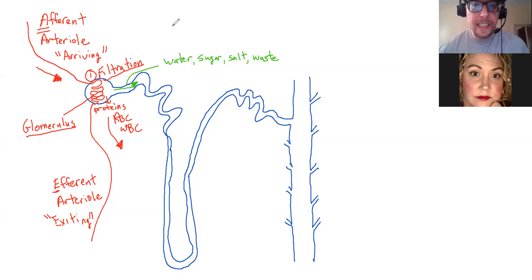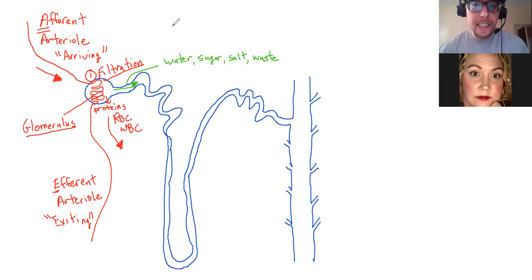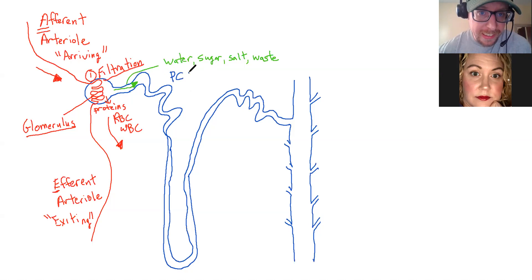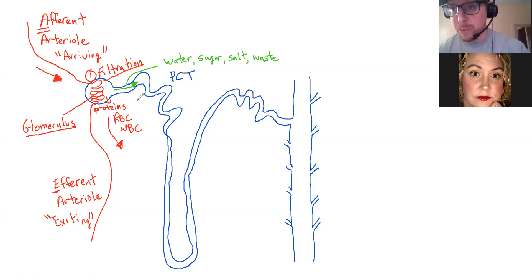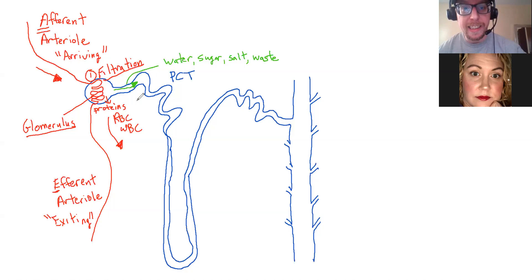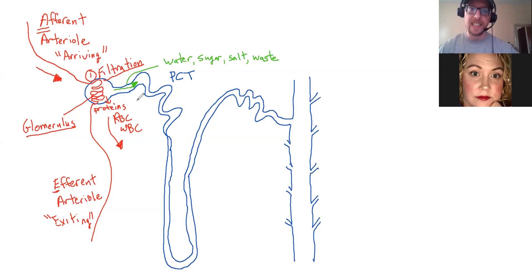After that, it enters into a part of the nephron called the proximal convoluted tubule - I'm going to just call it PCT. What does that mean? Proximal tells you where it's located - this tube is the closest to the glomerulus, that's why it's called proximal. Convoluted means curvy, and T for tubule. So it's a curvy tube close to the glomerulus. What happens here is a function called absorption, or reabsorption.